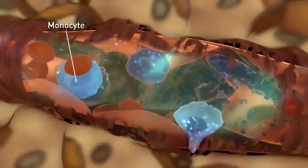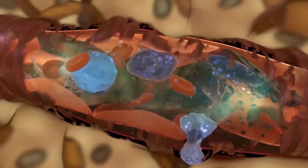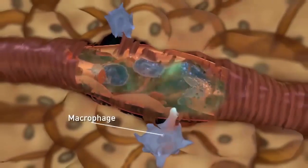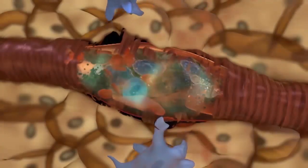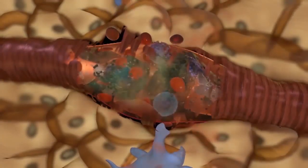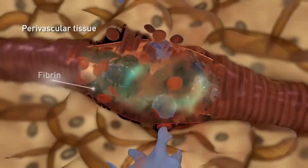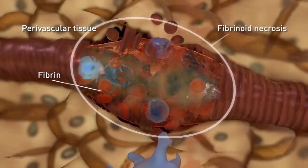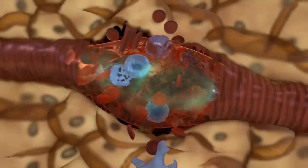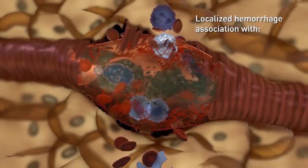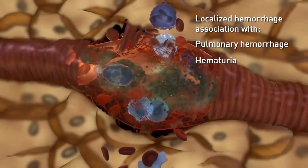Monocytes, activated by the same processes as neutrophils, can also contribute by differentiating into macrophages. ANCA-activated neutrophils and other inflammatory cells such as lymphocytes and monocytes infiltrate and destroy the vessel wall as the inflammatory and necrotizing process extends into the perivascular tissue. Fibrin formed by coagulation factors produces the appearance of fibrinoid necrosis. Injury to vessel walls can result in localized hemorrhage — for example, extravasation of red blood cells may be associated with pulmonary hemorrhage or hematuria.